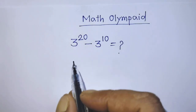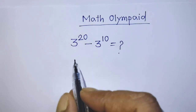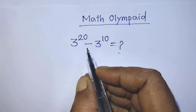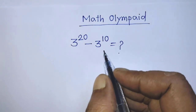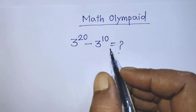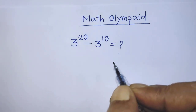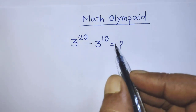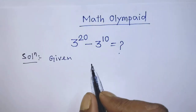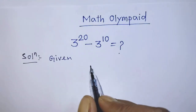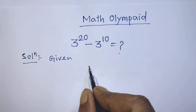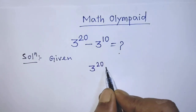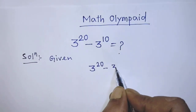Hello guys, you are welcome to solve this math problem, which is 3 to the power 20 minus 3 to the power 10. Today I am telling you how to simplify this algebraic expression. Our given algebraic expression is 3 to the power 20 minus 3 to the power 10.